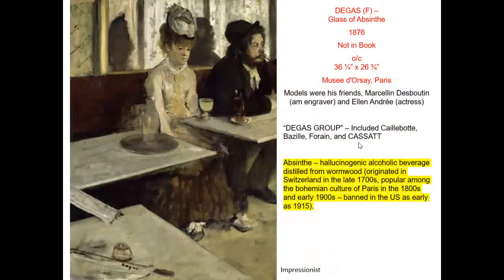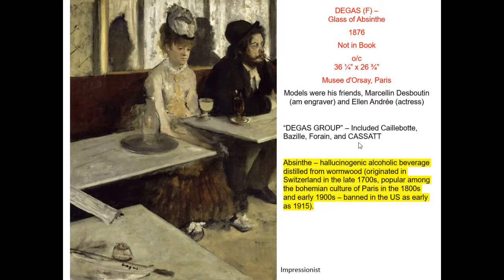Degas is the leader of the second Impressionist group, which is a little tighter in execution and uses more detail. You can also see the influence of Japanese prints being collected in Europe — a lot of floor plane showing, less back wall visible, as if we're looking down from a slightly elevated vantage point. In this image, figures are drinking absinthe — a vocabulary term: absinthe is a greenish alcoholic liquid with hallucinogenic effects. This is a commentary on the negative effect on people who take absinthe; she may be enjoying herself mentally, but the effect on her body is rather harsh.